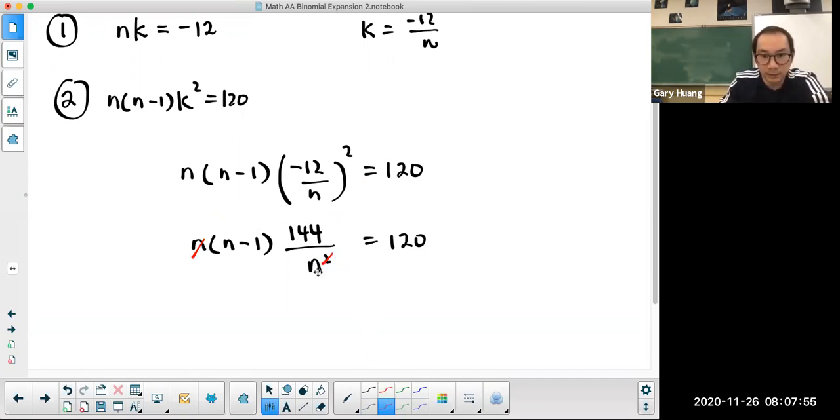And I'm going to bring this n to the other side. So here I'm getting 144n minus 144 equals 120n.